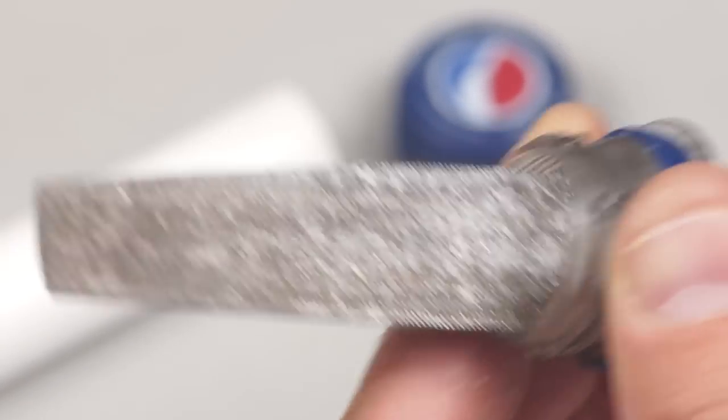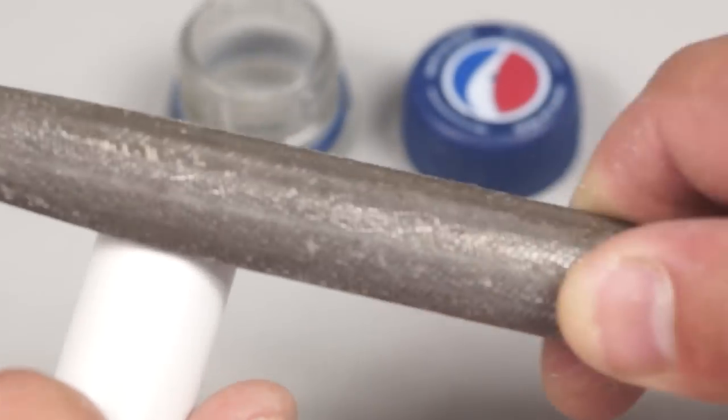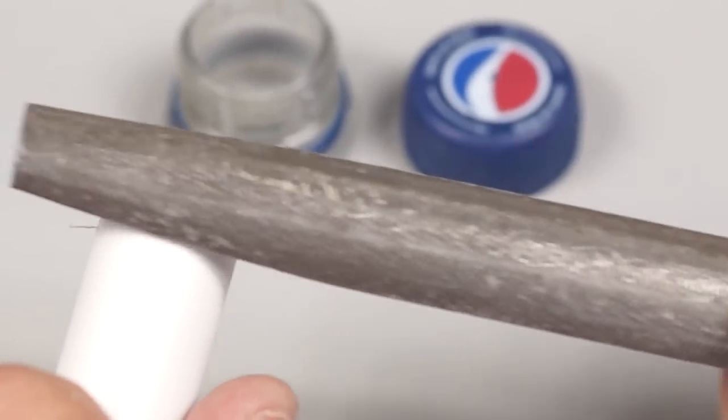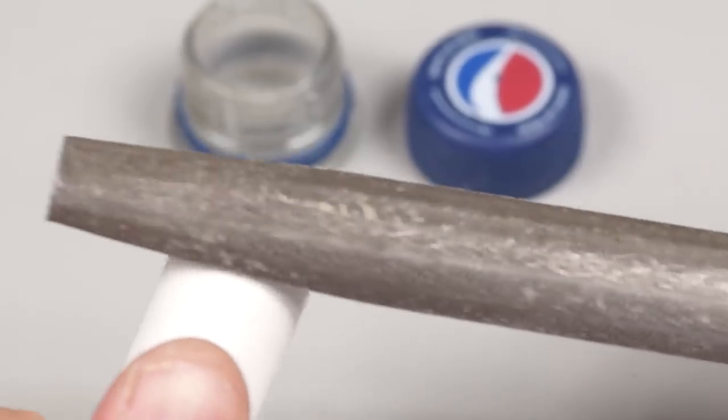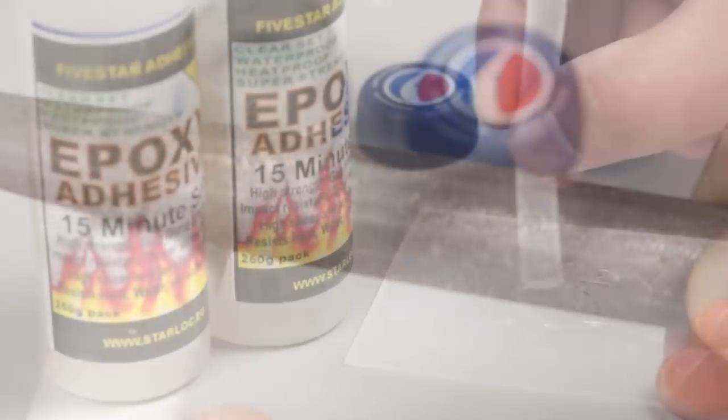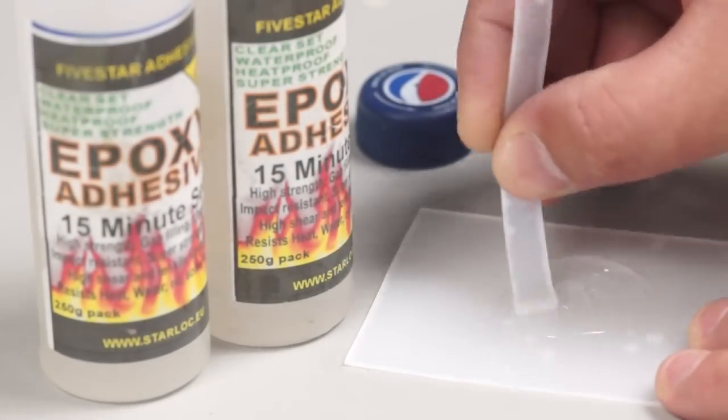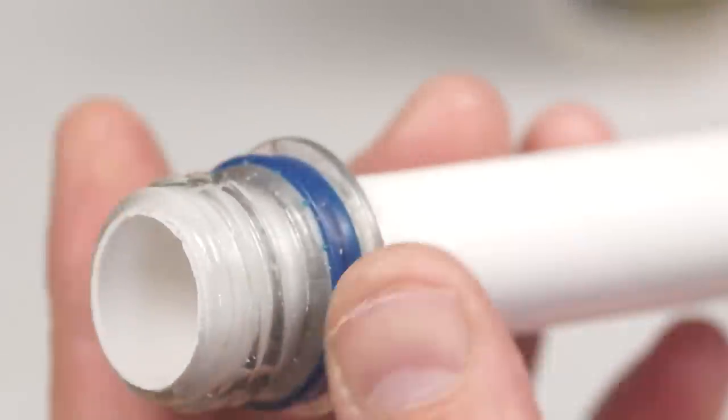Because these plastics tend not to bond too well together with glue I need to scuff both surfaces with a coarse file. Then I can mix up some quick setting epoxy and once applied I can slide the joint into position.